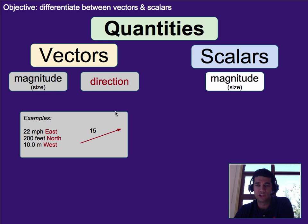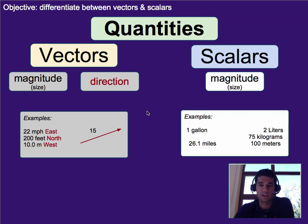Scalars, on the other hand, just have magnitude or size. What that means is those come out something more like one gallon, where it's just a number and the type of units, or two liters, or 75 kilograms, which doesn't have a direction, or even distances like this, 26.1 miles, but there's no specific direction. That's what scalars are.